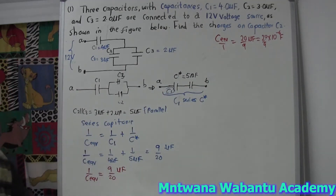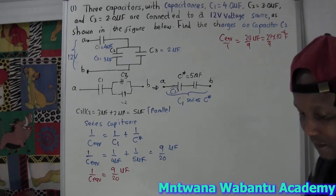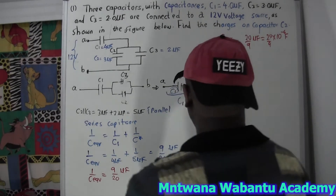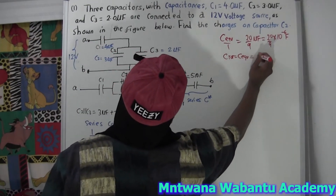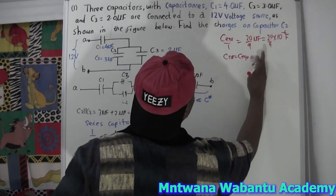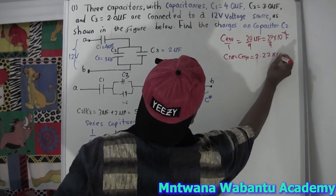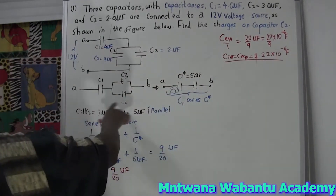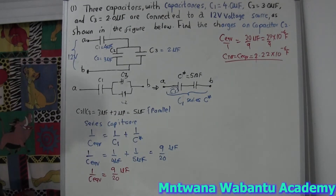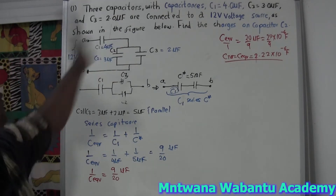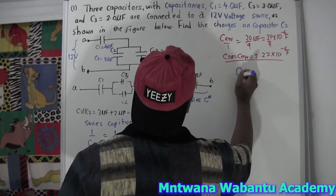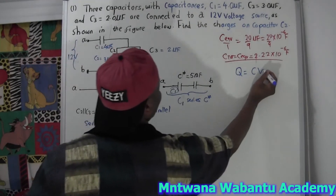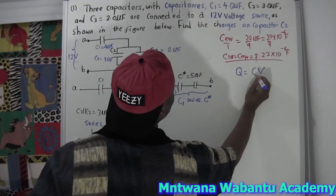Using a calculator: 20 divided by 9 gives approximately 2.22. So C_equivalent = 2.22 × 10^−6 farads, or 2.22 microfarads. This is the total equivalent capacitance of the whole circuit.